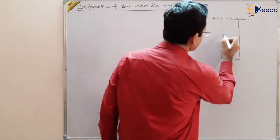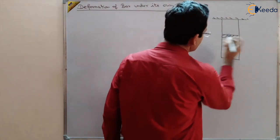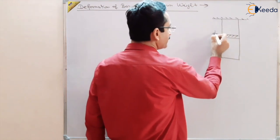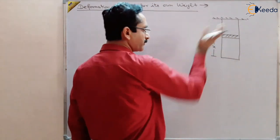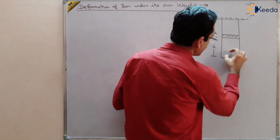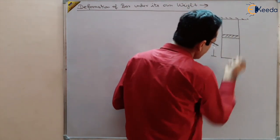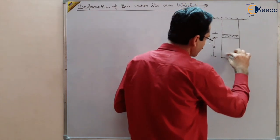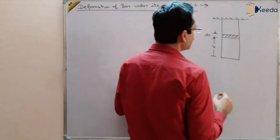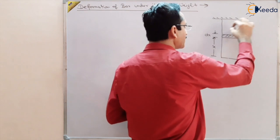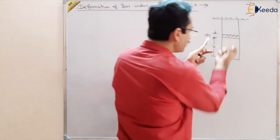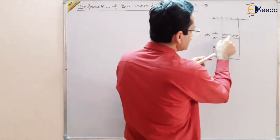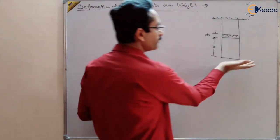Let us take a small element dx at a certain distance x from the bottom edge. Different parts of the body are trying to pull and deform this body in different manners. Since each element will have a different weight causing deformation, we have chosen a small element dx and then we will integrate — we will find the deformation in this small element and integrate that deformation from 0 to L.